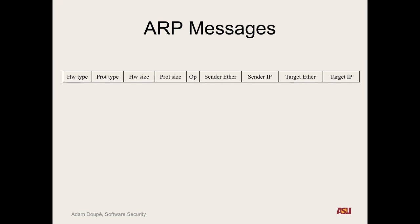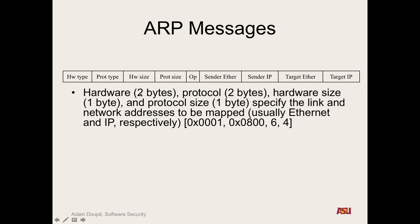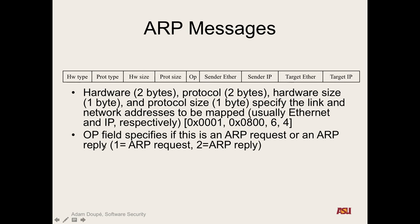So now we can look at the format of an ARP message. There's first the hardware type — there are different types of hardware — protocol type, the size, the protocol size, and it specifies the link addresses to be mapped. The op field says if it's a reply or a request.